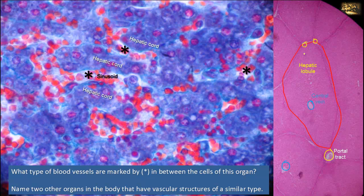Sinusoids are generally found in bone marrow, spleen, lymph nodes, and some endocrine glands, in addition to the liver where we can see them here, full of red blood cells.